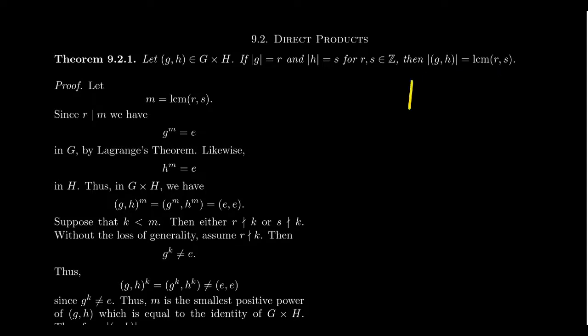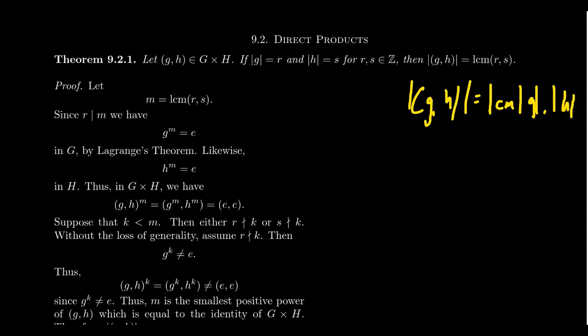then the order of the pair in the direct product will be the least common multiple of r and s. So in other words, the order of (g,h) in the direct product, this will be the LCM of the order of g times the order of h individually. So for the sake of simplicity, let's call the LCM, the least common multiple of r and s, let's call it little m.